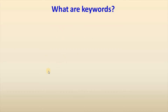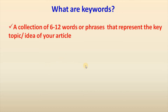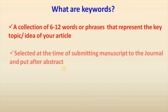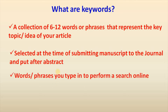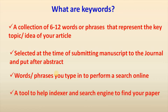Let us learn what keywords are. Keywords are a collection of 6 to 12 words or phrases that represent the key topic or idea of your research article. They are selected at the time of submitting a manuscript to the journal and placed after the abstract. Keywords are words or phrases that you type to perform a search online, and they are also a tool to help indexers and search engines to find your paper easily.